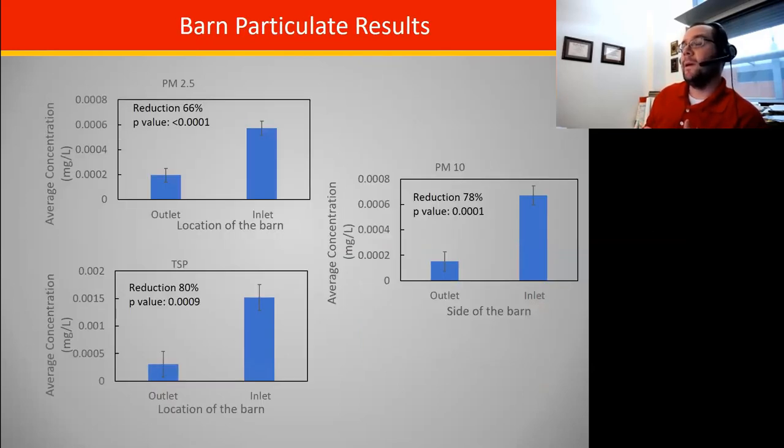If we look back at what we saw for the barn sort of scale results in terms of particulate matter, it did a pretty nice job of removing particulate matter from that air stream. With the total suspended particulate, a statistically significant reduction, but removing somewhere around 80% of the particulate matter with a little bit lower removal rates for some of those smaller systems: 78% and 66% respectively for PM10 and PM2.5.